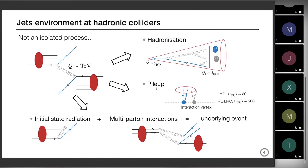It could happen that in your jet of interest, particles from another pp collision end up there and pollute what you call a jet. Just to give a number: the number of pileup interactions is around 60 at the LHC, which is already quite high. But it will increase dramatically for the high luminosity phase, where we expect to reach 200 pileup interactions per bunch crossing. So pileup is going to be one of the dominant sources of uncertainty in jet analyses at the future high luminosity LHC.